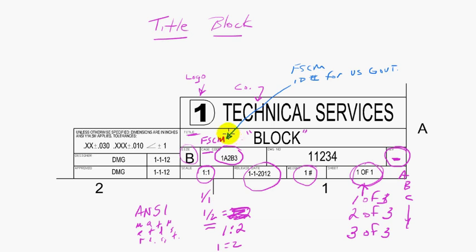And it's a unique identifier for each company. And so when that number is in the title block it tells you who has the design authority for this product that's represented on the drawing, using their federally issued identification number. Now not all companies have those but anybody who does business with the government will have one, certainly any defense contractors.